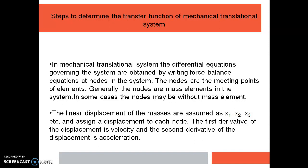Each of the nodes will be identified first, and the linear displacements of the masses are assumed as x1, x2, x3, etc. In most cases, nodes are nothing but the mass elements. For each mass element, we assume a displacement: x1 for mass element 1, x2 for mass element m2, x3 for mass element m3, and so on.